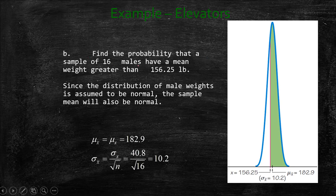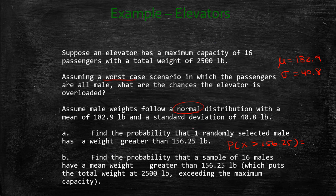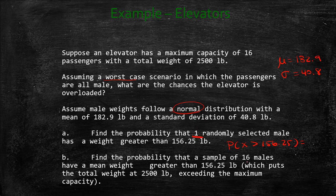Now we want to find the probability that a sample of 16 males have a mean weight greater than 156.25 pounds. So notice there's a difference. This, we're looking at one random man. Now we're looking at a sample of 16 males. Now we're finding the probability that the mean weight is going to be greater than 156.25 pounds. So we're looking for x bar is greater than 156.25. Well, now we're not talking about this population anymore. We're talking about if we have a whole bunch of 16 men and they randomly get on an elevator, we want to know if their mean weight is greater than 156.25 pounds because that means their total weight is going to be more than 2,500 pounds.